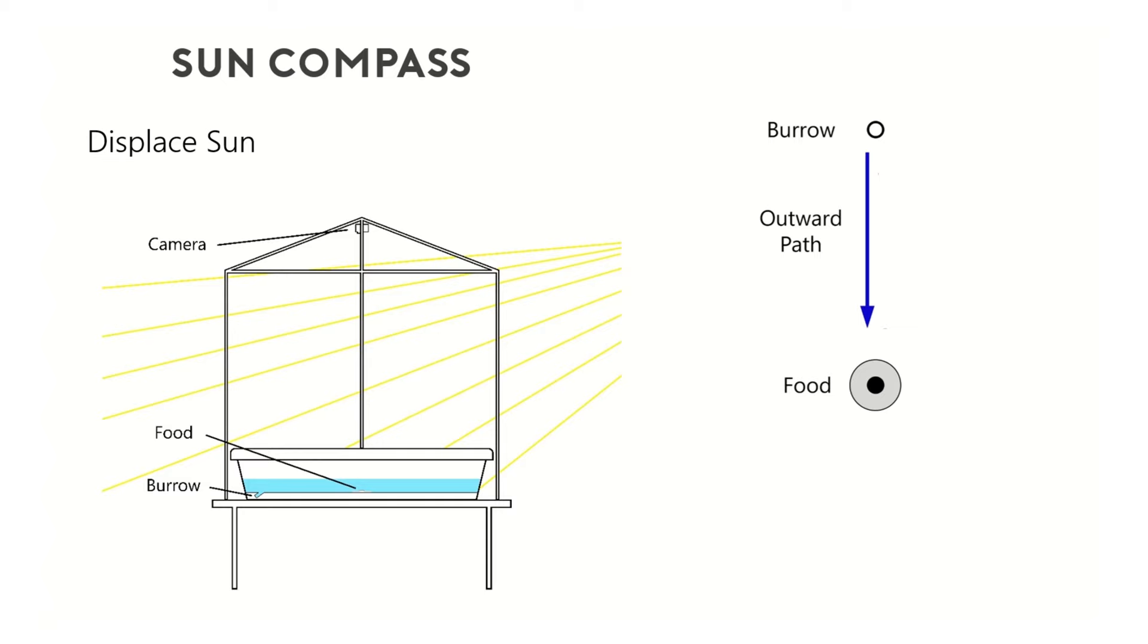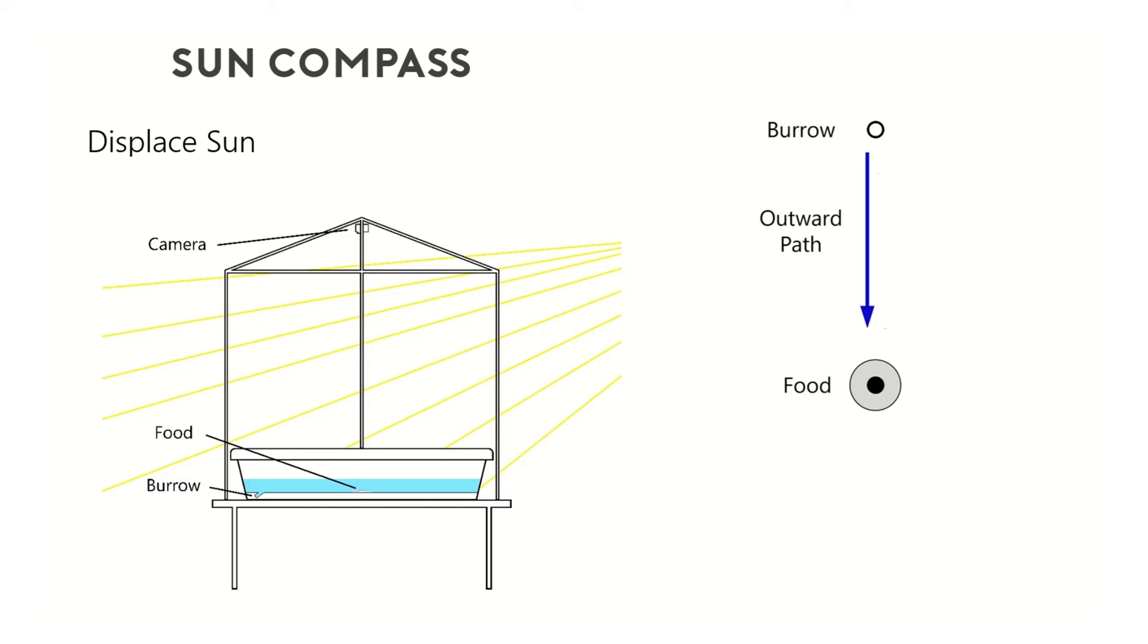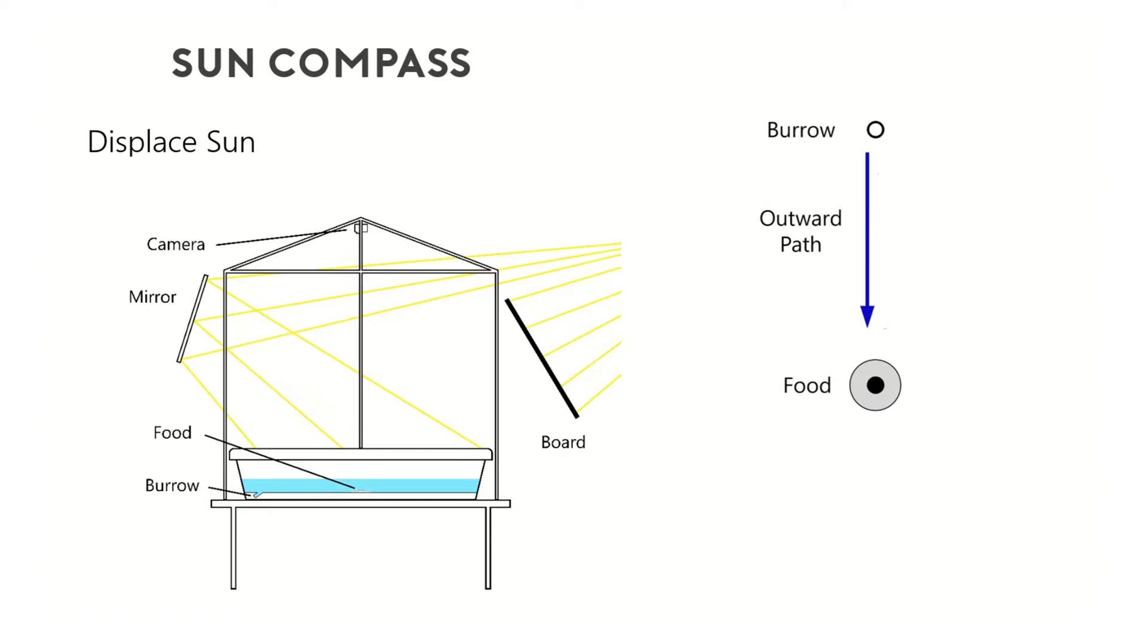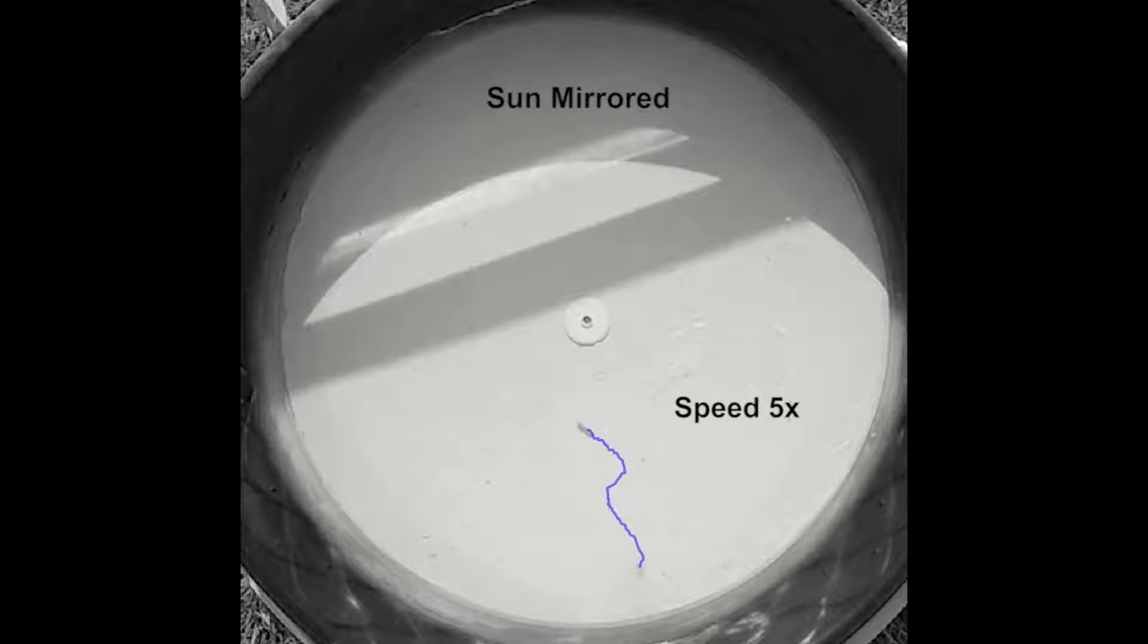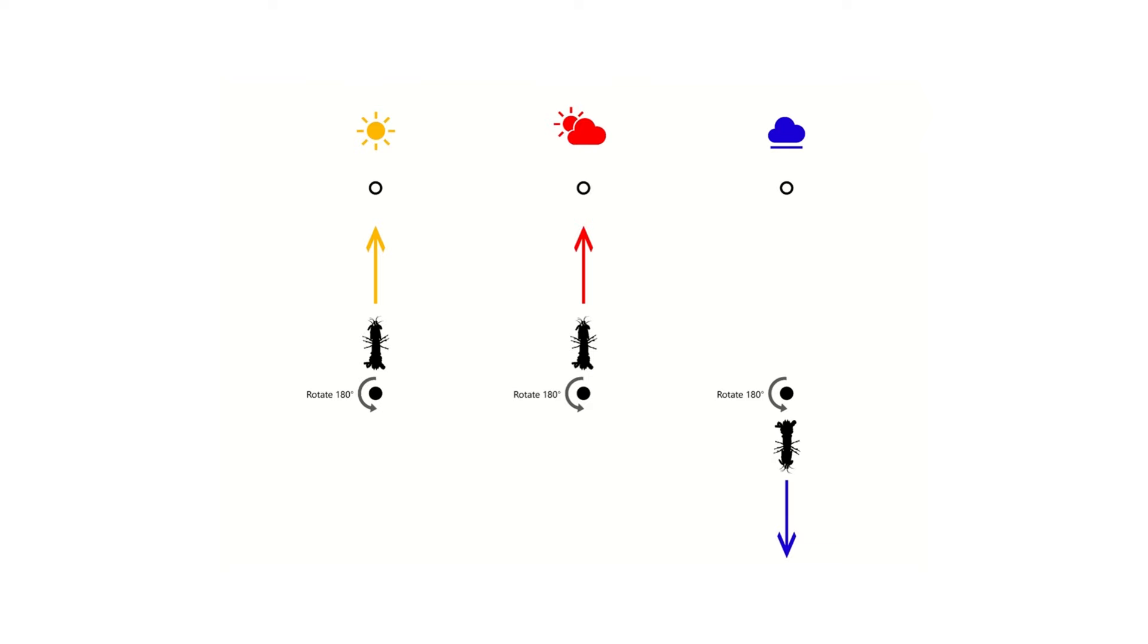Since the sun is the dominant feature in the daytime sky, we tested if mantis shrimp used the sun as a compass to orient by blocking the sun with a board and mirroring the sun to make it appear as if the sun was in the opposite side of the sky to a mantis shrimp in the arena. During this condition, if mantis shrimp use the sun for orientation during path integration, they should orient their homeward paths in the opposite direction of their burrows. We found that when the sun was blocked and mirrored in this manner, mantis shrimp would most often orient their homeward paths away from their homes, demonstrating that they indeed used the sun for orientation.